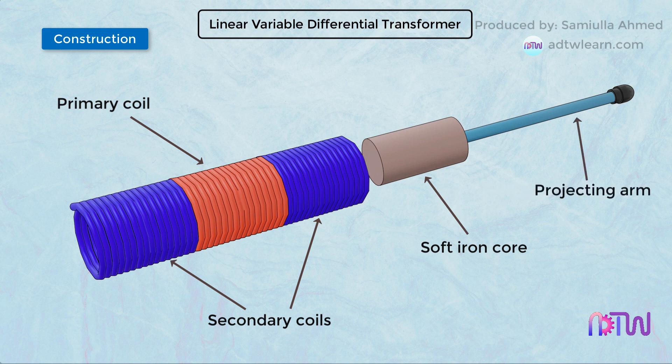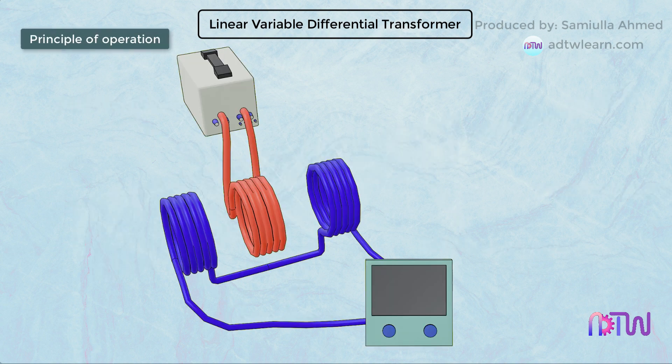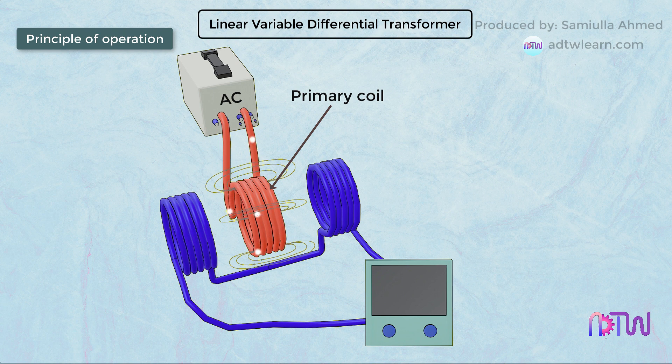The soft iron core carries a projecting arm which is then attached to the object whose displacement needs to be measured. Principle of operation: When the primary coil is given an AC supply, current flows through the primary coil.